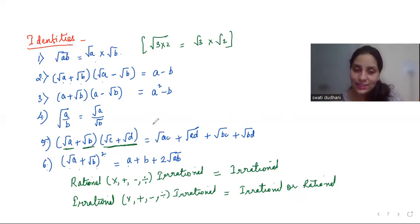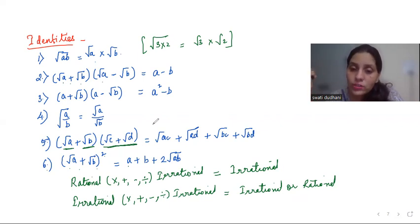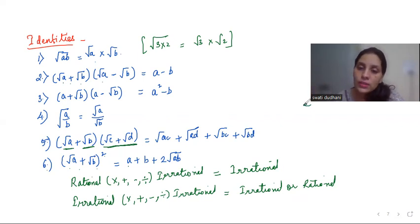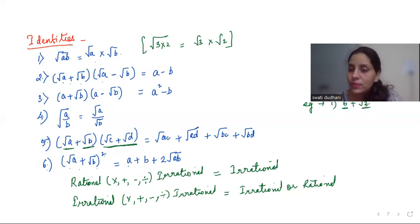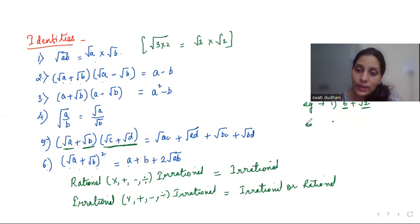Two interesting points: when you operate between a rational number and an irrational number — whether addition, subtraction, multiplication, or division — you always end up with an irrational number. For example, 6 (rational) and root 2 (irrational): adding gives 6 + root 2, multiplying gives 6 root 2, dividing gives 6 by root 2 — all irrational.